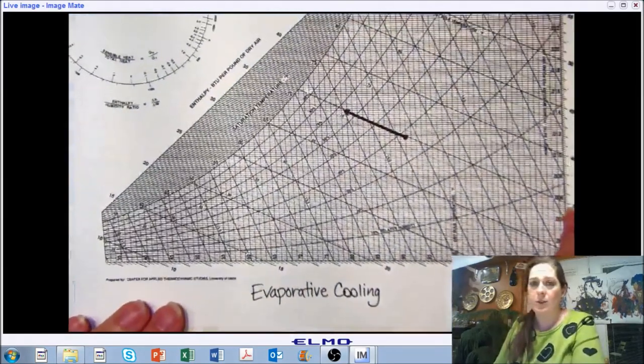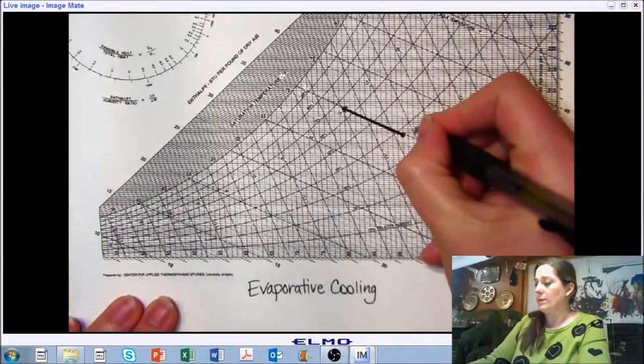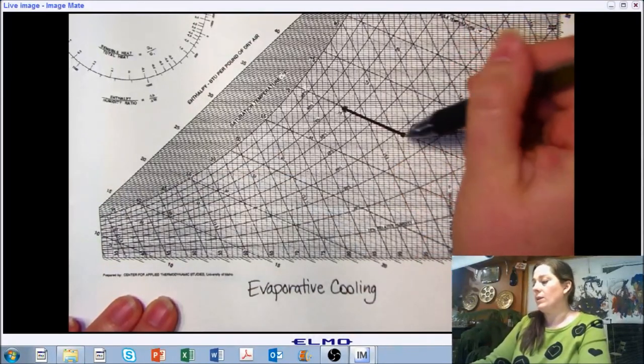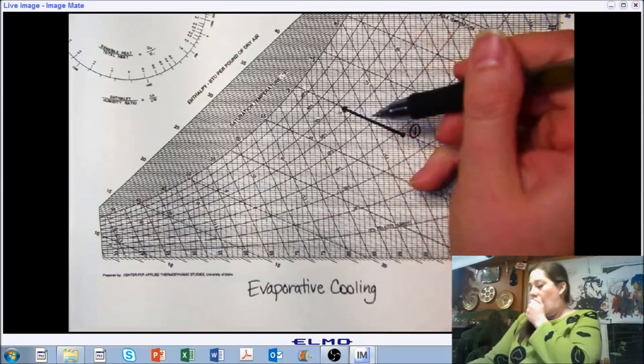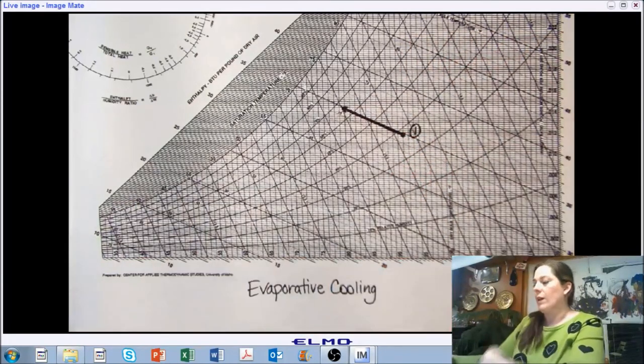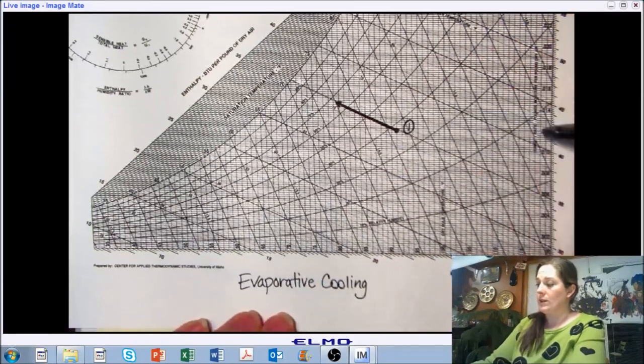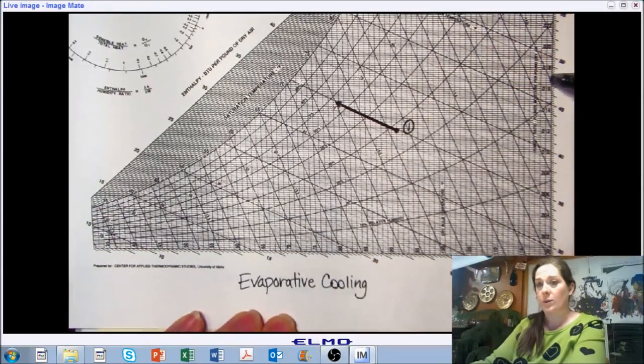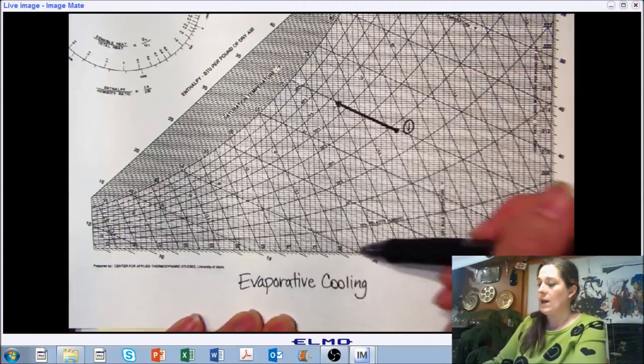All right, and on our psychrometric chart, we start with some state point and we move along the line of constant enthalpy. Along that process, we are, as you can see, adding moisture to the air, so we're moving up and humidity ratio, but we are cooling, so we're moving down in temperature.